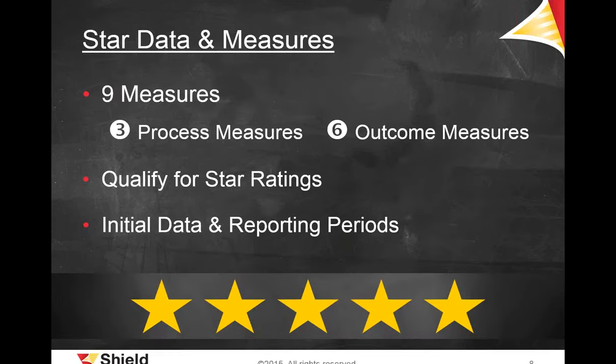Your agency is going to receive nine star ratings based on three process measures and six outcome measures. The two process measures your agency will be ranked on are patient and caregiver education and information about a flu shot. The other measures are based on how well and how fast you were able to provide care, and whether or not a patient improved from the beginning of the episode until the end of the episode.